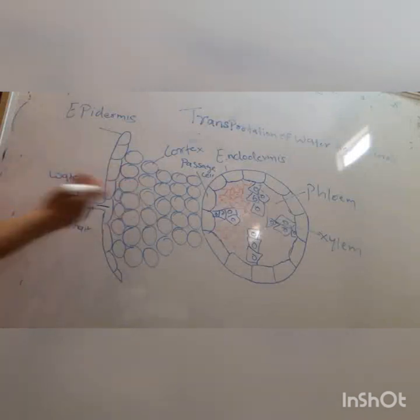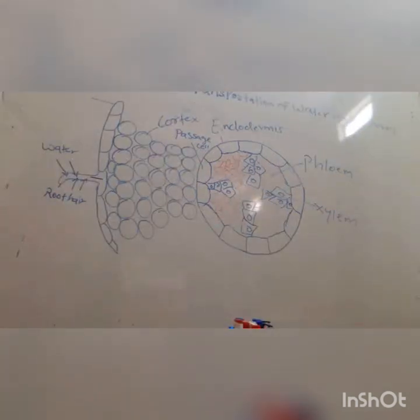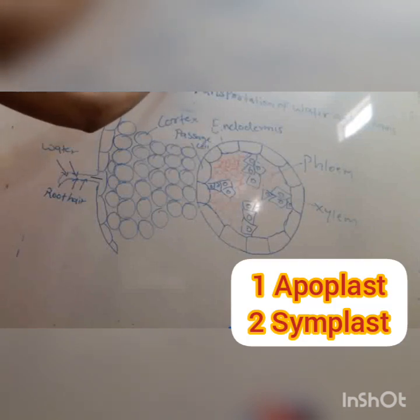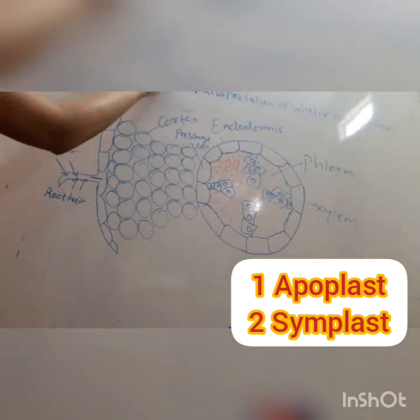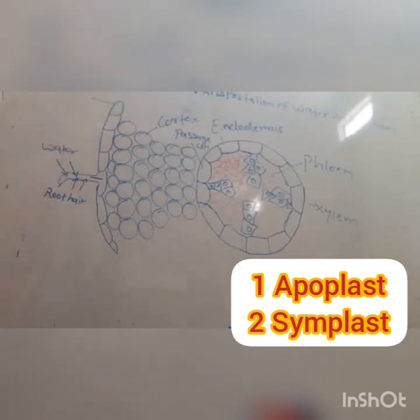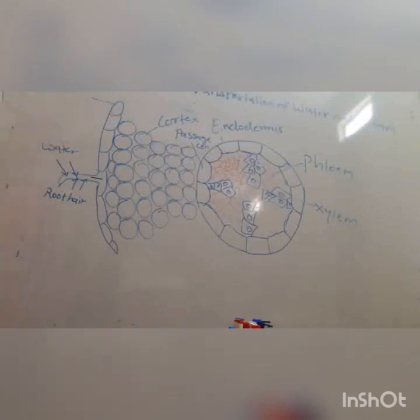After epidermis, water has to move towards the cortex, and there are two types of movements in the cortex region. The first movement is apoplastic type of movement, and the second one is symplastic type of movement.